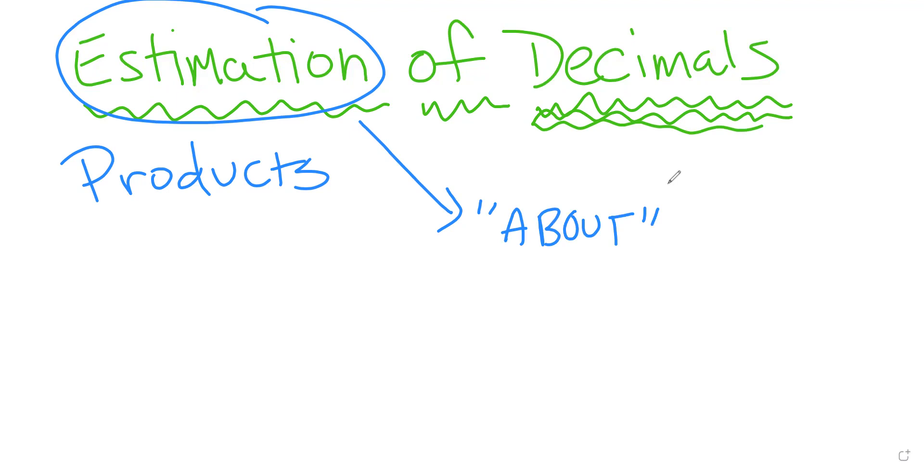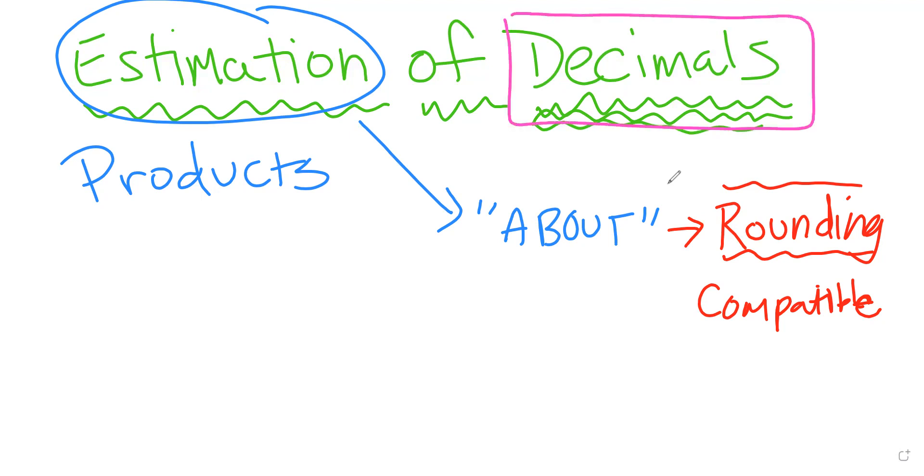It is a really good way to help double-check your work. When I think about an estimation, I should think about rounding. This is more free because you're thinking about what is compatible versus the exact rule of rounding. Then we're going to think about how we're doing this with decimals.